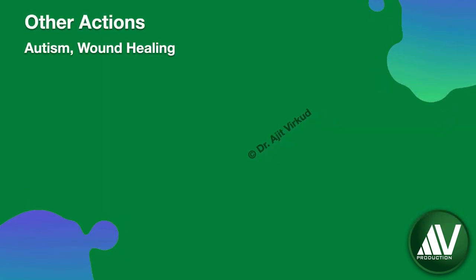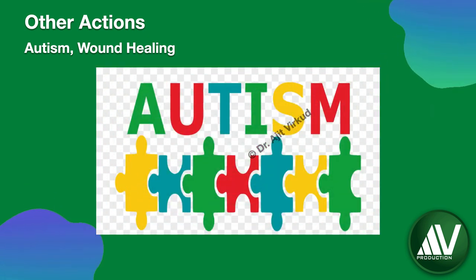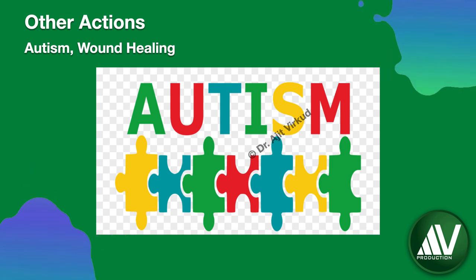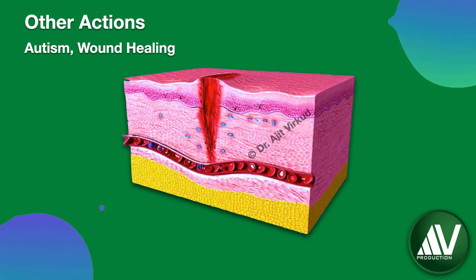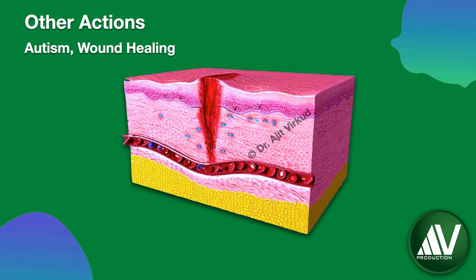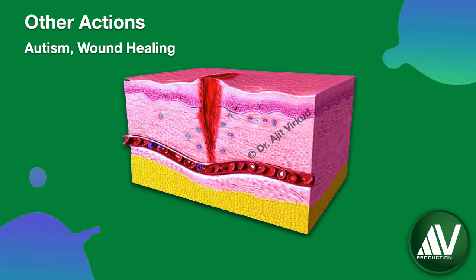Studies have shown that there may be a role for oxytocin in the treatment of autism. Evidence also shows that oxytocin injections have a positive influence on wound healing — oxytocin counteracts the effects of cortisol, so less stress means increased immunity and faster recovery. This may open up new vistas for the use of oxytocin in conditions like chronic ulcers.